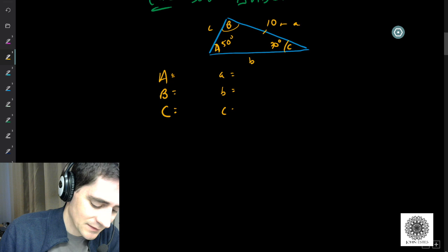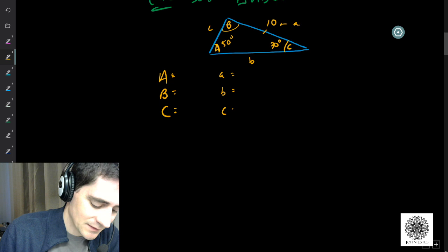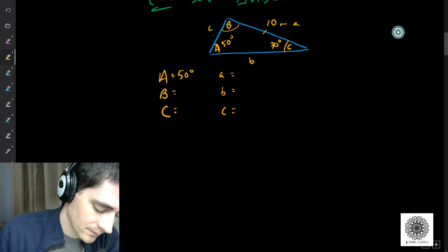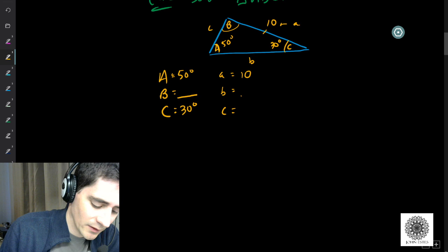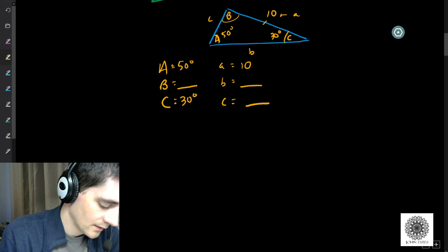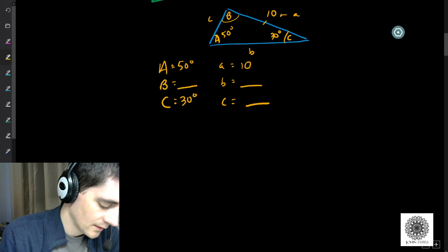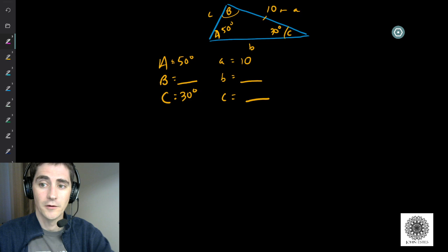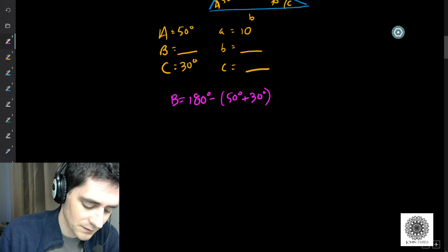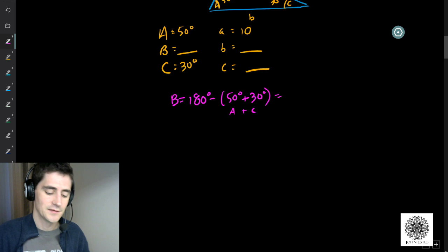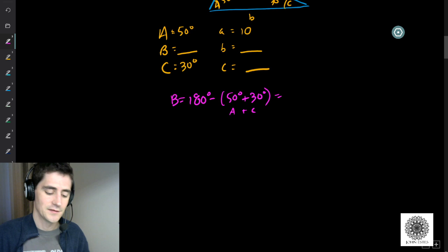We know angle A is 50 degrees, angle C is 30 degrees, and side A is 10. The low-hanging fruit is angle B, because A plus B plus C equals 180 degrees. So angle B is 180 degrees minus the sum of 50 and 30 degrees, giving us B equals 100 degrees. The angles are taken care of.